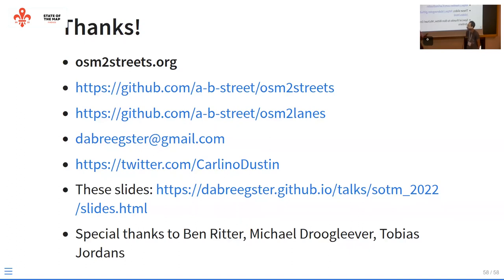Question: does adding all this detail make it too difficult for new mappers to join OSM? I really hope not. The experience right now if you're joining OSM and trying to map roads is already complicated. Starting by drawing the center line and mapping the number of main vehicle lanes is fine. As soon as you want to add more detail — like cycle lanes — it's hard right now; you have to learn all the schema. I'm hoping this will make it easier by providing a nice interface to look at it.